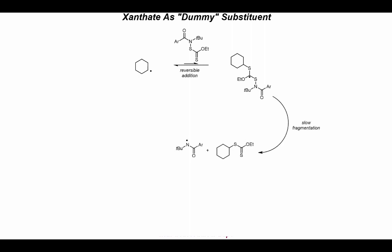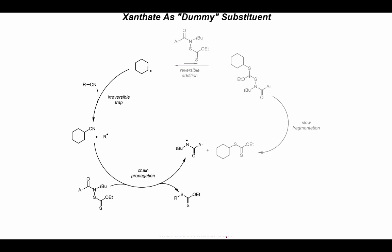So we returned to tried-and-true radical chain mechanisms. We thought we could use the xanthate of our xantholamide as a dummy substituent. In our normal xanthylation reaction, we have a carbon-centered radical which can add into the thiocarbonyl of the xantholamide reagent, forming a stabilized captodative radical — and that's actually a reversible step, so we can undergo C-S bond fragmentation to give back our carbon-centered radical, leading to a pretty high effective lifetime. We thought we could take advantage of this high effective lifetime and instead add in some irreversible trap like a nitrile, with the resulting R radical engaging in a chain propagation step to give another equivalent of our amidyl radical.